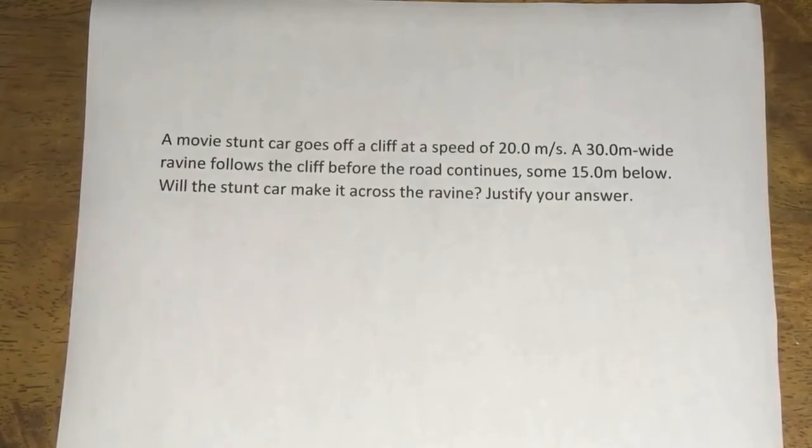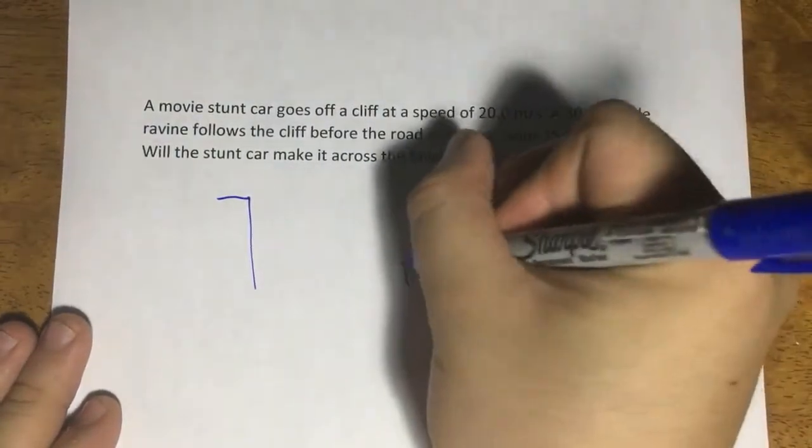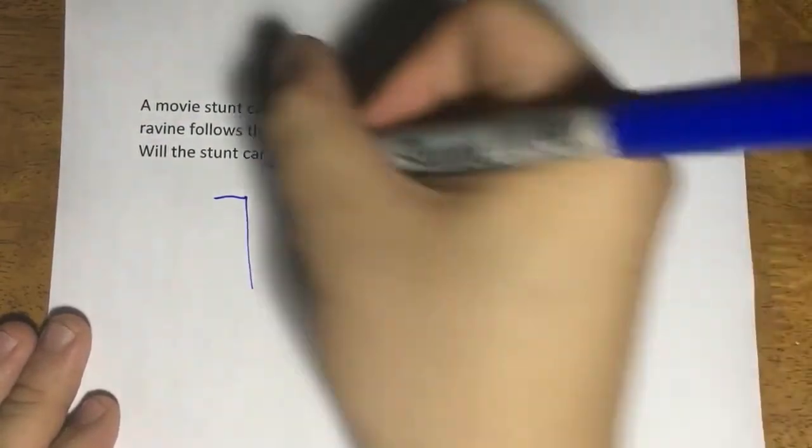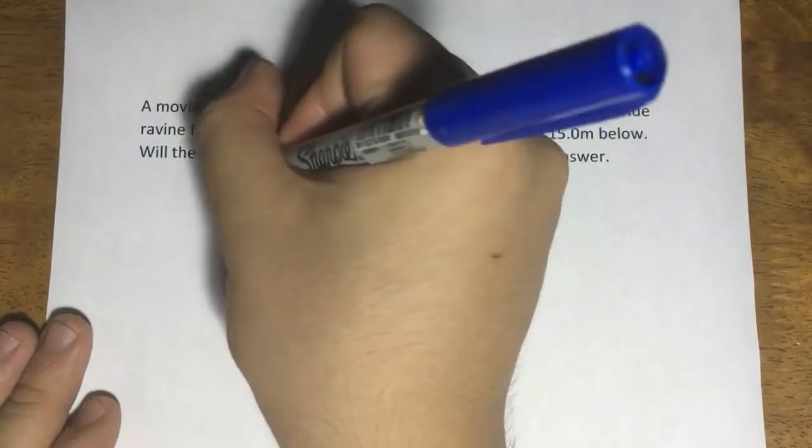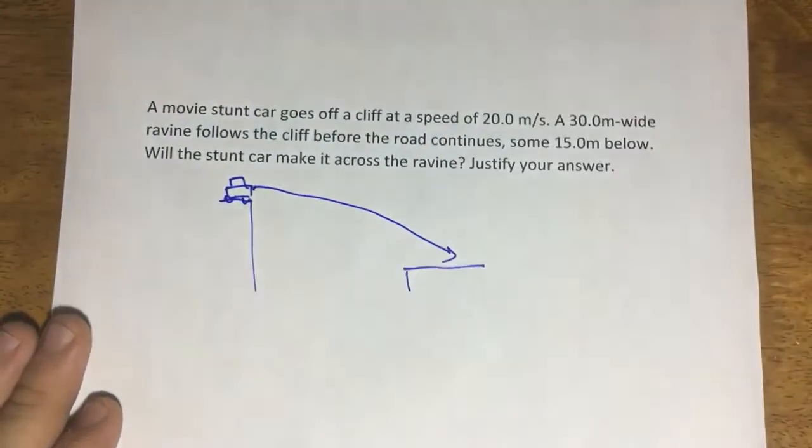So it's a good old justification problem. Let's see how we can solve this. We have a cliff and we have another cliff where the road continues. The car is here. The stunt car goes off the cliff like so and lands over there.